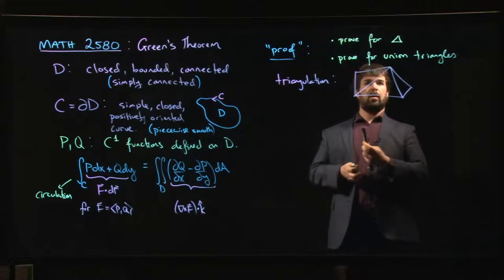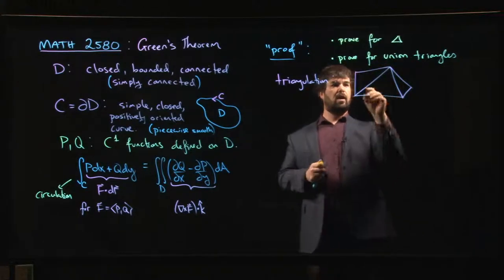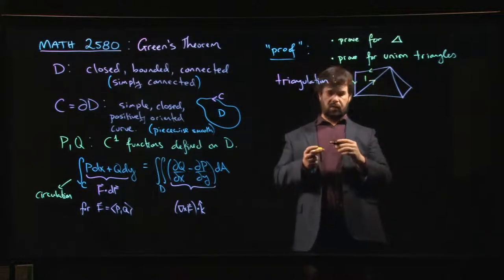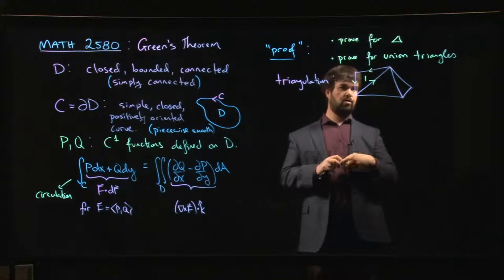And then the way this would work is that if you start thinking about orientations, right? For region one, you go around like that, that's your positively oriented curve there. And then you move on to region two.